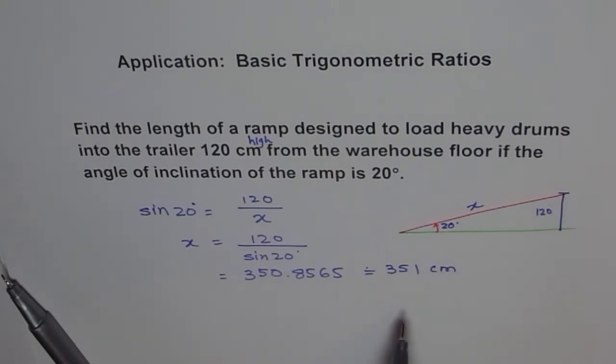Now we should write down the answer in words: the length of the ramp should be 351 centimeters to load heavy drums into the trailer 120 centimeters high. Thank you.